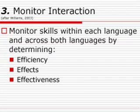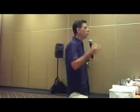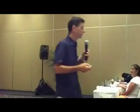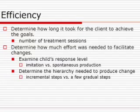Monitor the interaction. Monitor skills within each language by determining efficiency, effects, and effectiveness. We need to be sure that when kids change, it's a result of the therapy we're doing and not something else. Efficiency: determine how long it took for the client to achieve the goals — look at number of treatment sessions, for example. Determine how much effort we need to facilitate change.